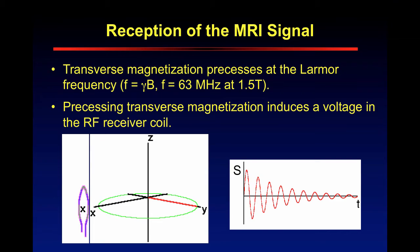How do we find the MRI signal? The transverse magnetization precesses at what's called the Larmor frequency — the frequency determined by the magnetic field strength. At a 1.5 tesla magnet, it's 63 megahertz; at 3 tesla it would be different; 7 tesla, 9 tesla, so on and so forth. The Larmor frequency is the frequency at which the protons precess. The precessing transverse magnetization induces a voltage in the RF receiver coil, and this makes a Fourier transform. As this receiver is listening in, it is making a Fourier transform.